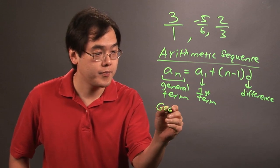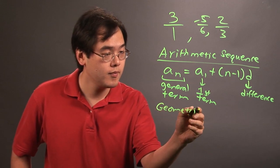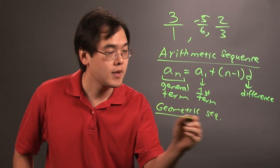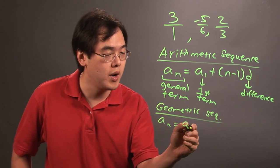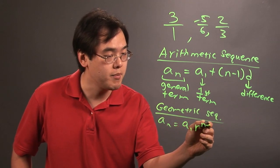Now, if it's a geometric sequence, you may have to use a_n is equal to a_1 times r to the (n minus 1).